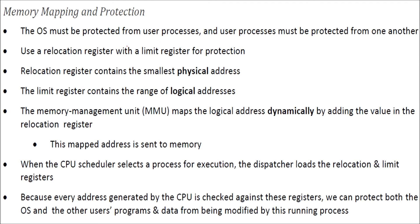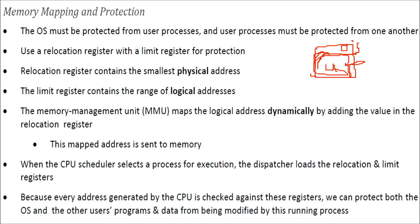Memory mapping and protection is very important because the operating system needs to be protected from the user process, and user processes must be protected from one another. To achieve this, we use a relocation register along with a limit register for protection.